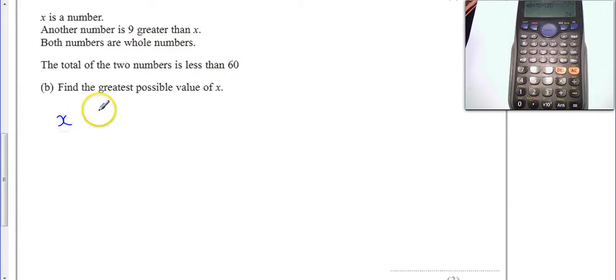Well, x is a number. When we add it onto the other number, which is x plus 9, because it's 9 greater, we know it's strictly less than 60. So when I sort all this out, 2x plus 9 is less than 60.